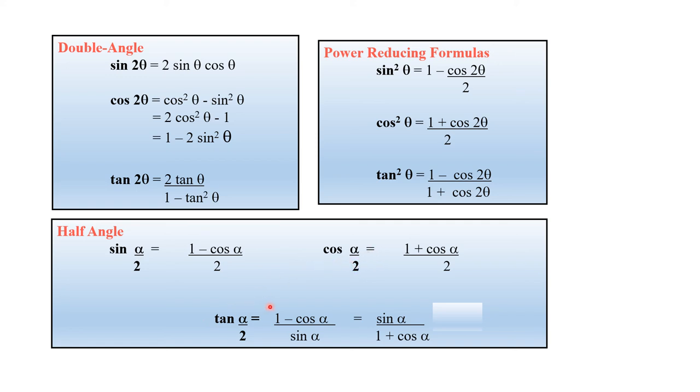Tan(theta over 2) is equal to (1 minus cos theta) divided by sin theta, or equivalently sin theta divided by (1 plus cos theta).